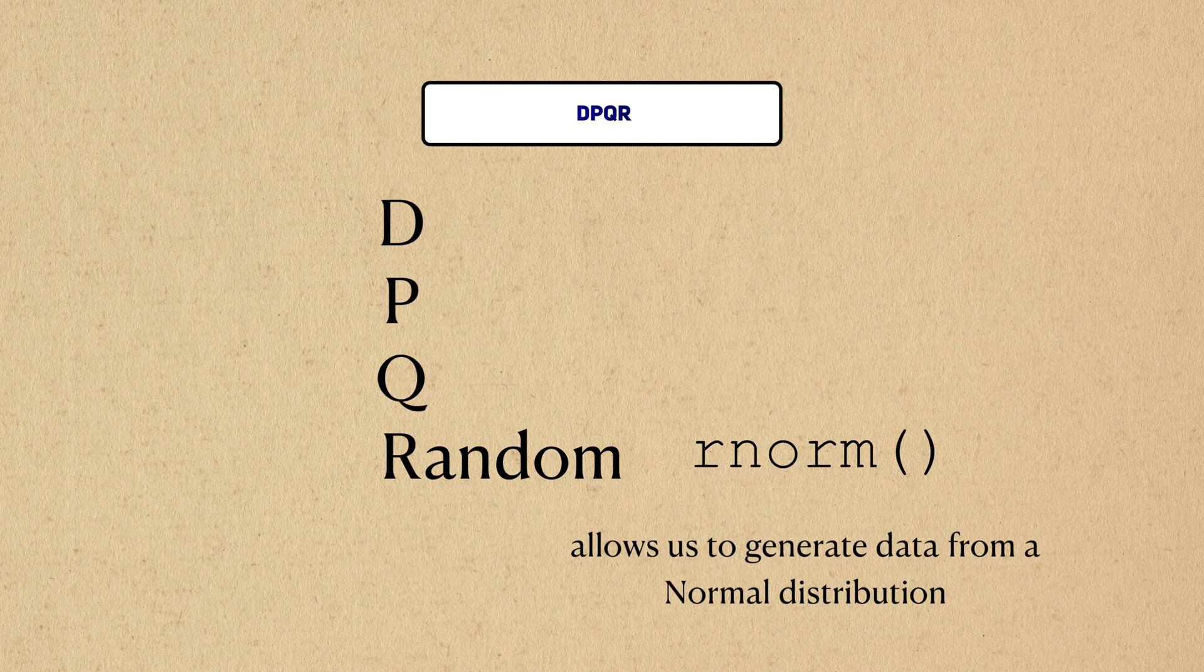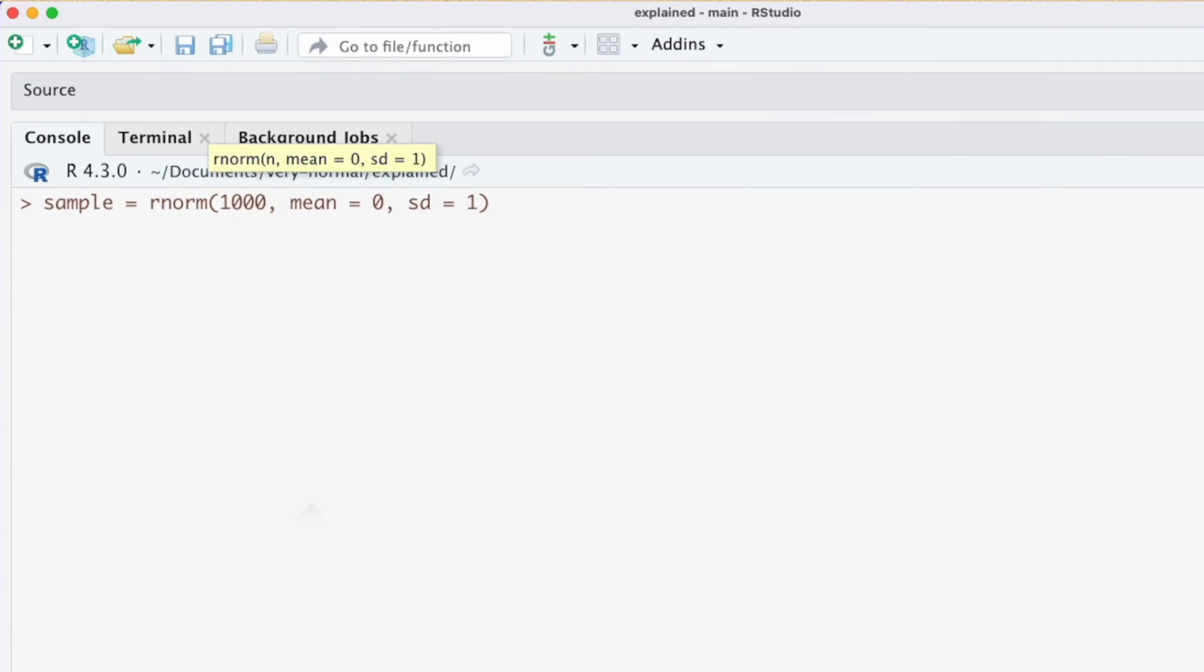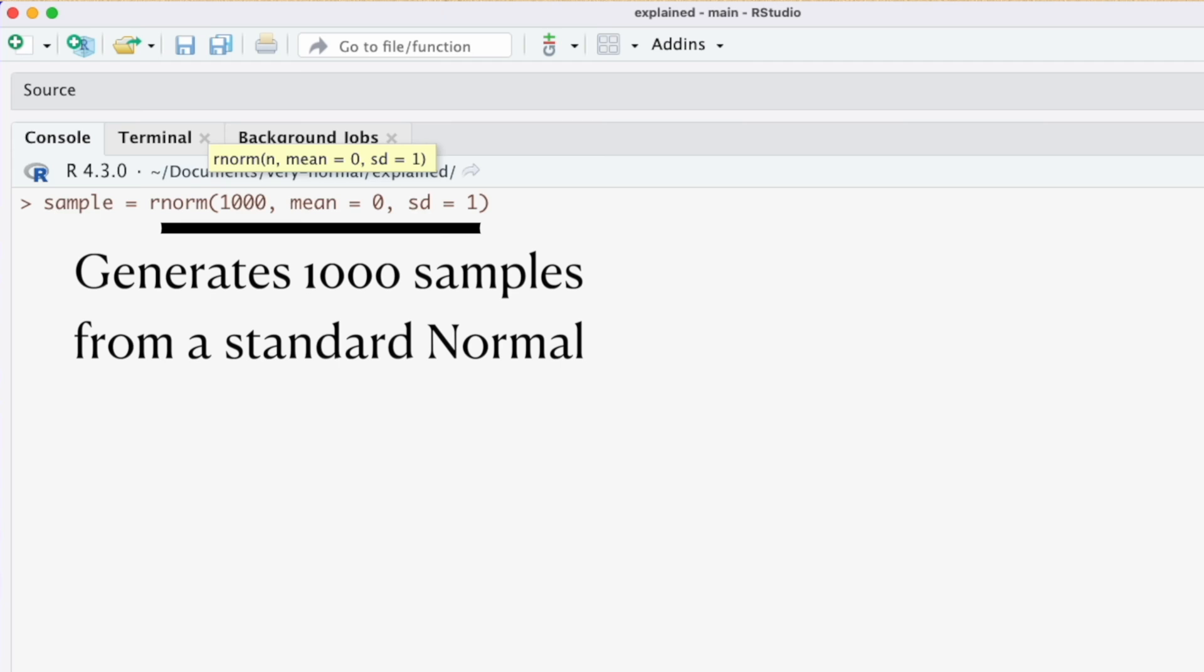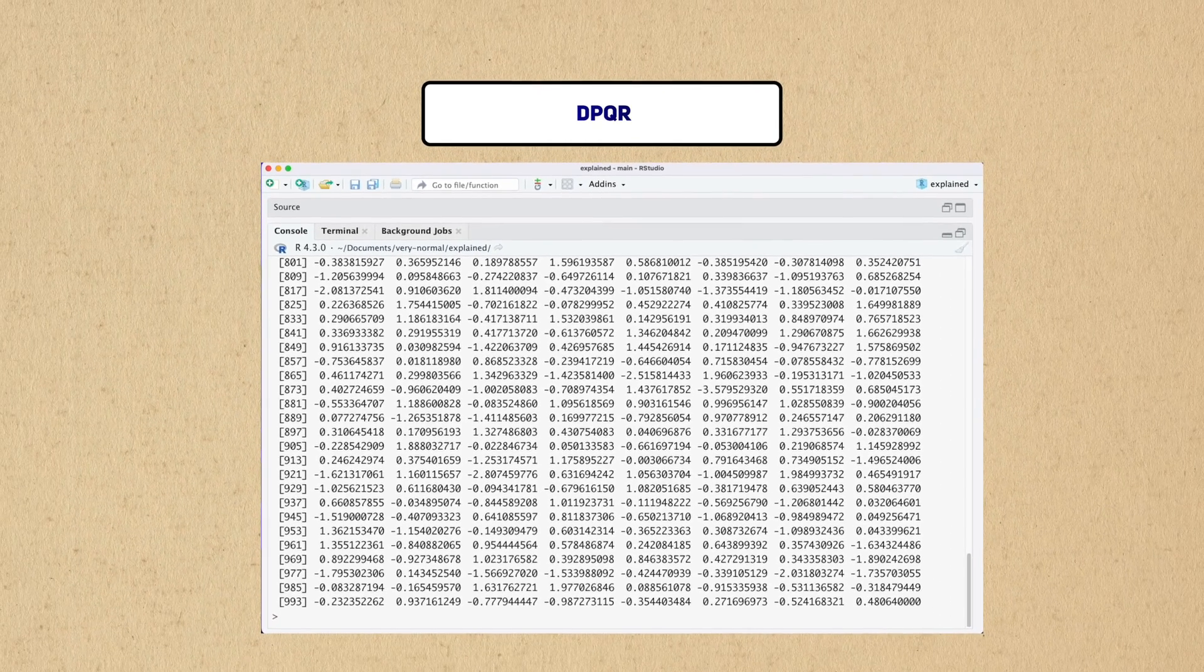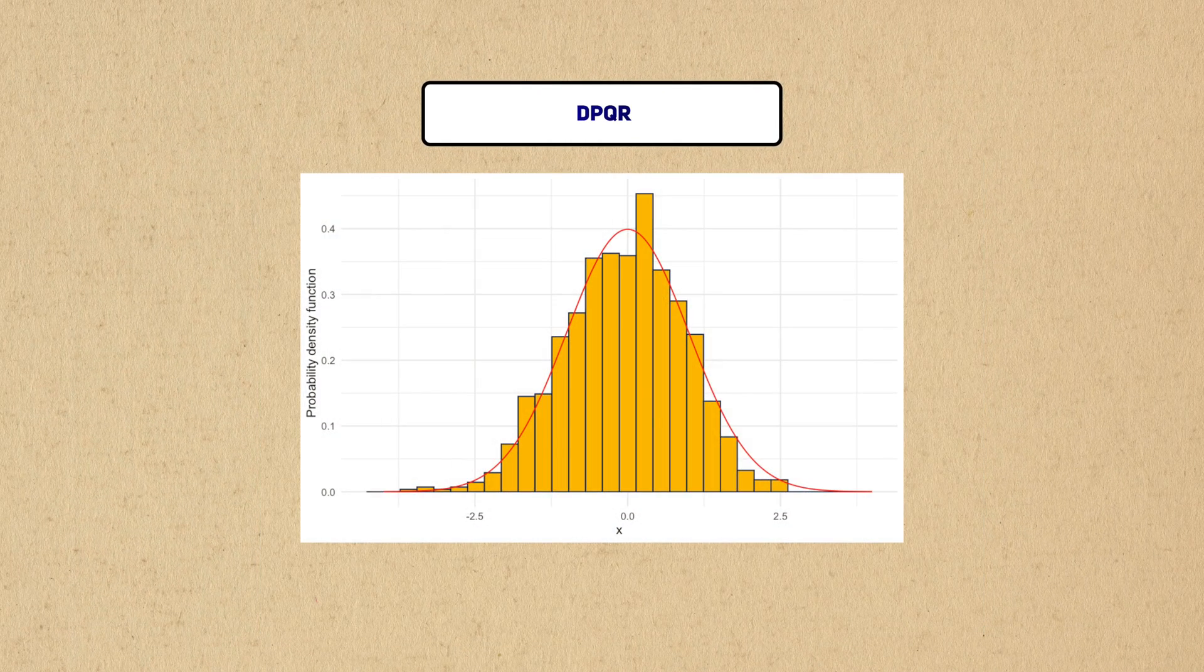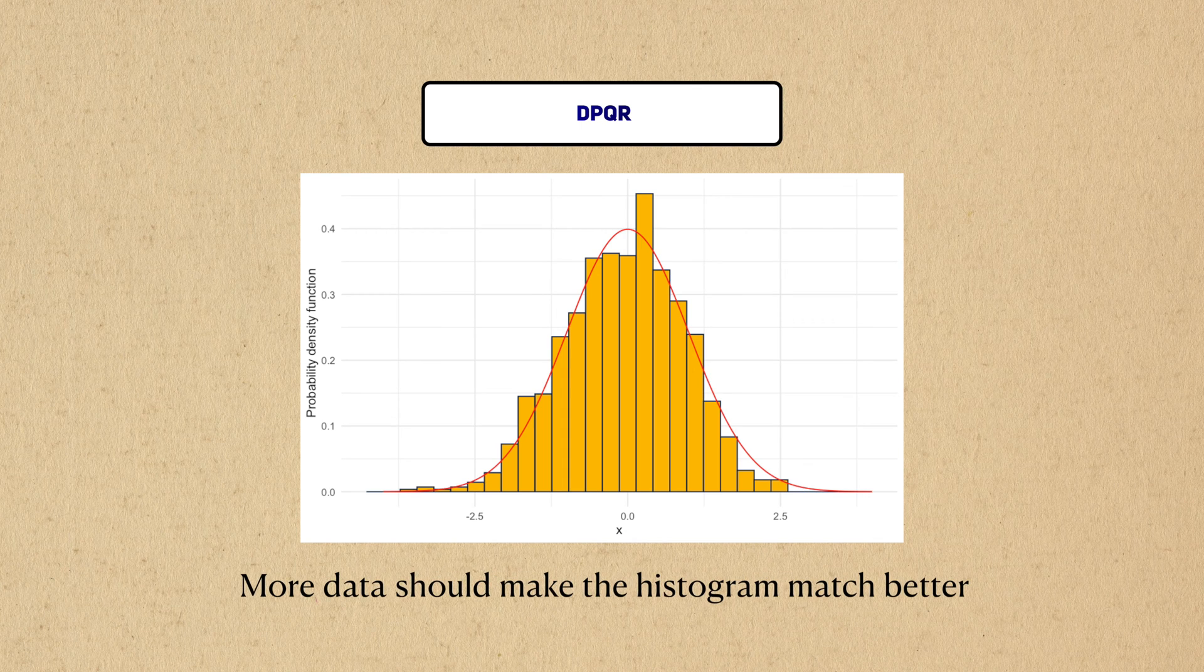R stands for random, and the rnorm function allows us to generate data from a normal distribution. We can tell this function how many data points we want to generate, and we can specify the mean and standard deviation of the normal we want to generate from. Note that I said the standard deviation and not the variance. The standard deviation is just the root of the variance, so it's an easy calculation to make. I'll simulate data from a normal distribution with mean 0 and a standard deviation of 1, also known as a standard normal. The end result is a bunch of simulated data. If I take the histogram of this data, it should resemble the distribution I specified. Here's a plot of the estimated histogram compared to the true probability distribution. If we have even more data, the two should resemble each other more.